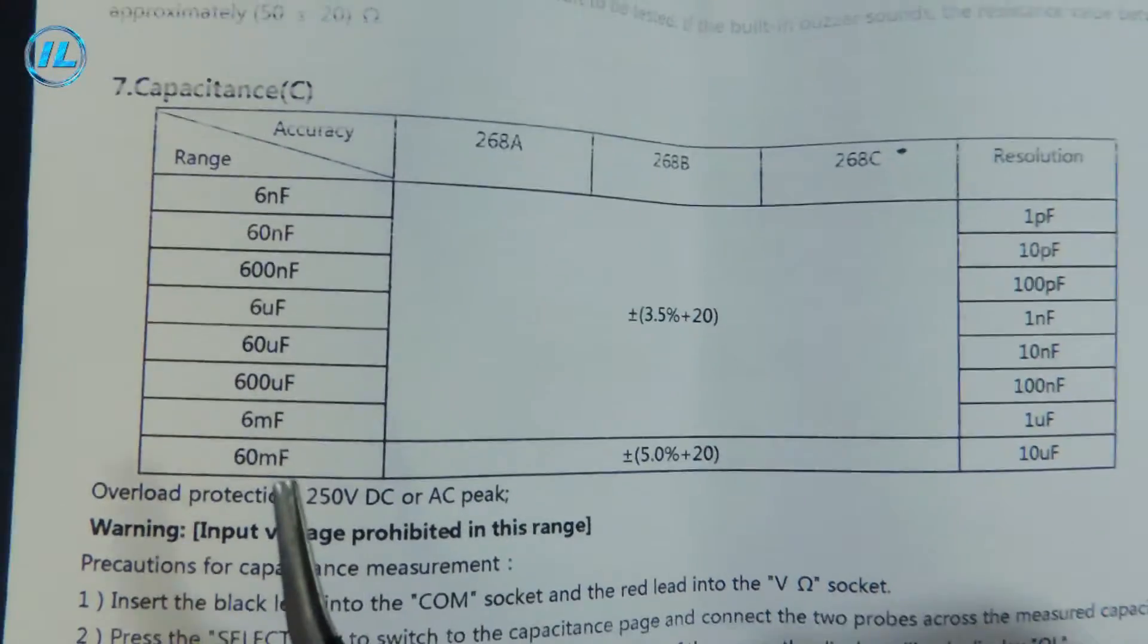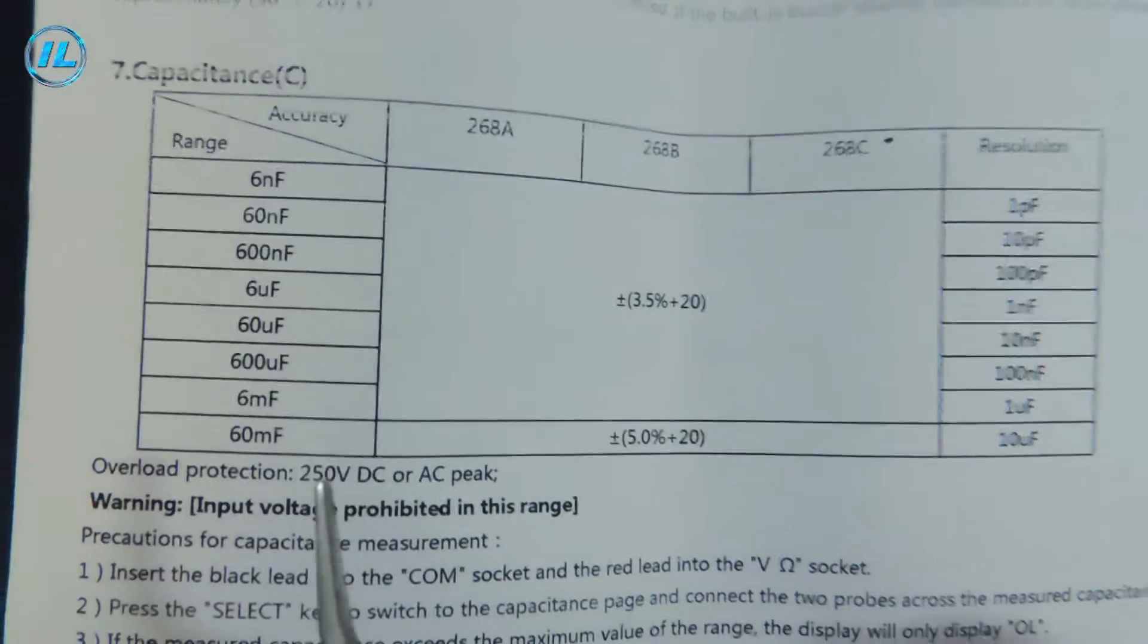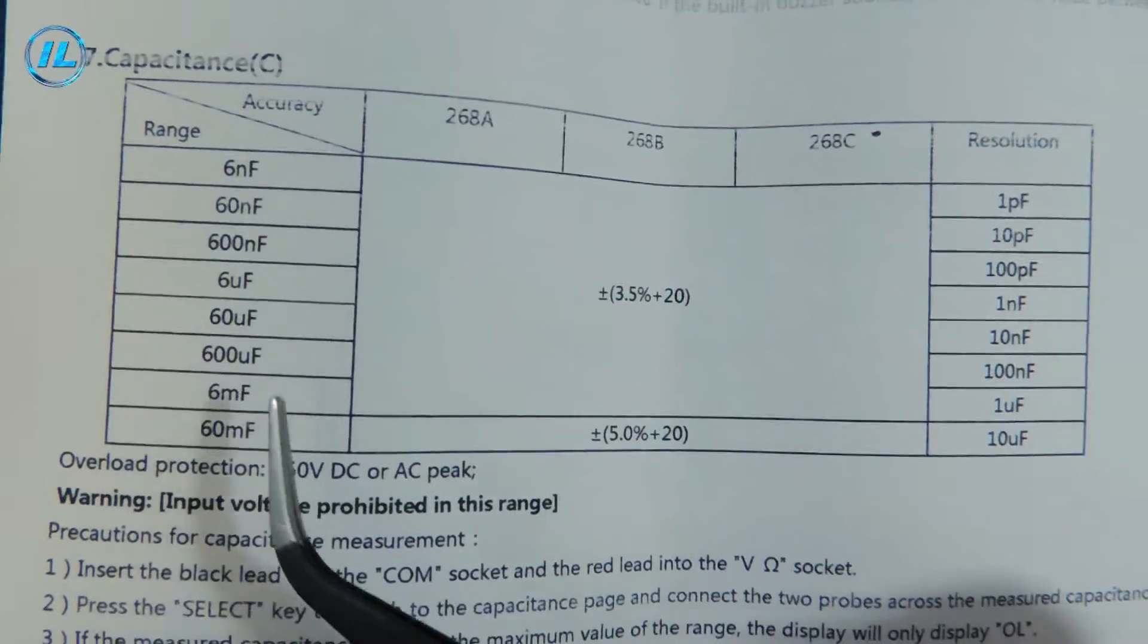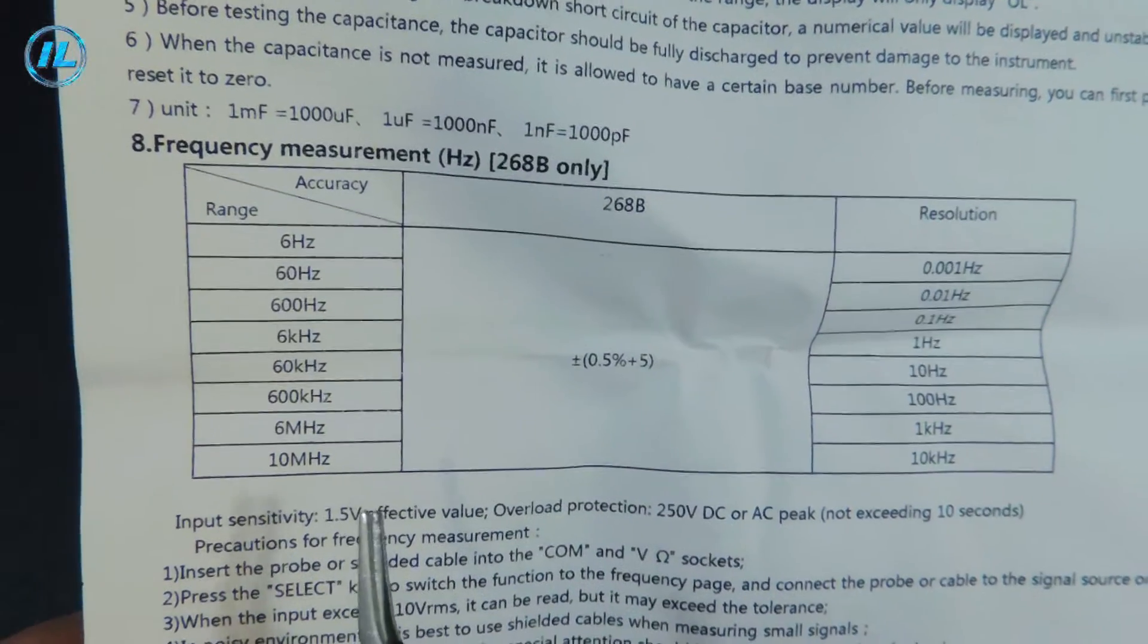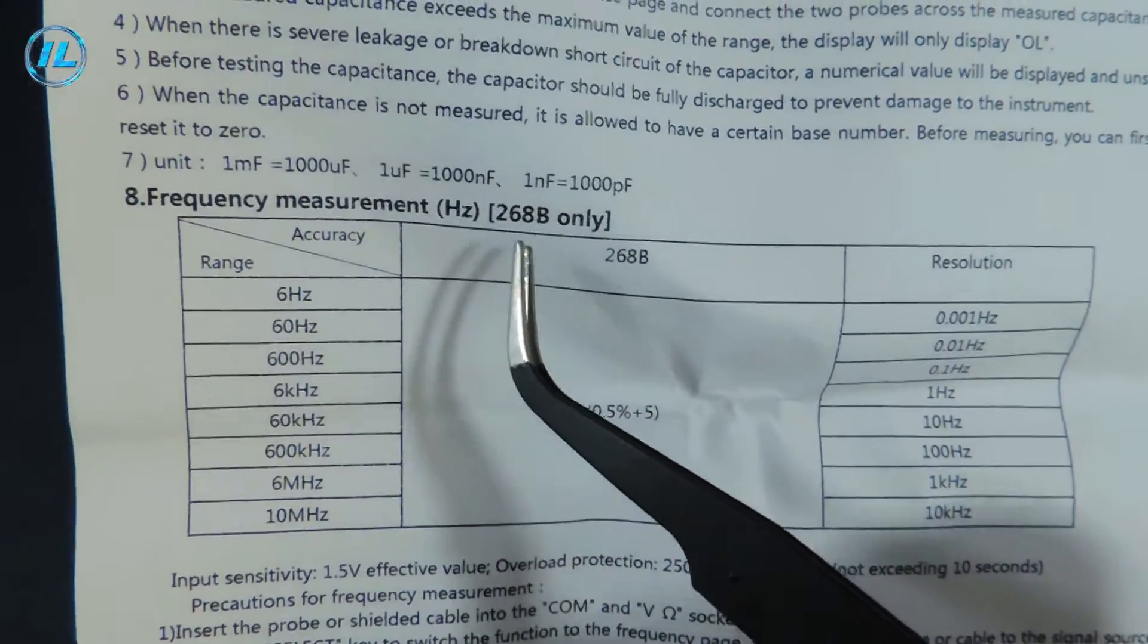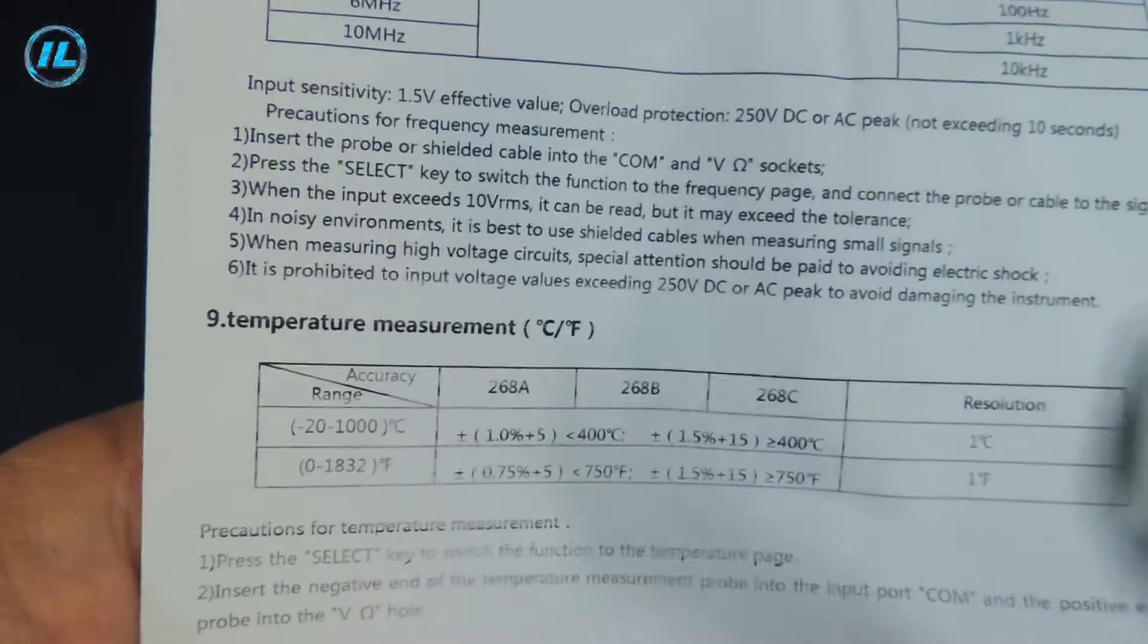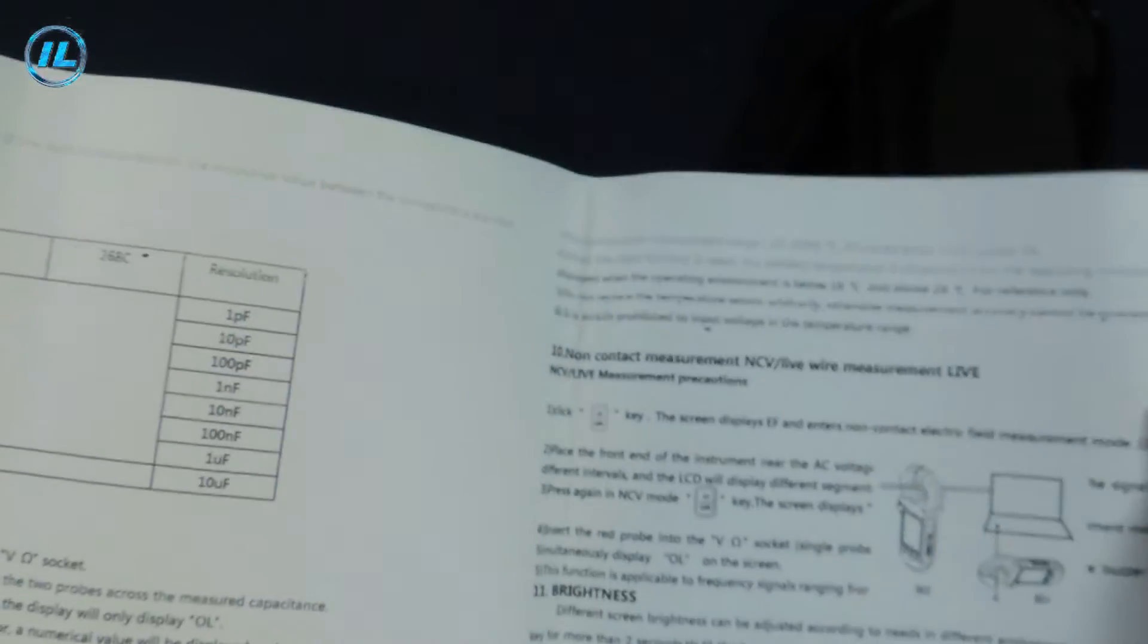The next sheet, and a few more parameters. Measuring capacity up to 60 mF, that is, up to 60,000 microfarads. The error is 5%. But when measuring up to 6 mF, the error is 3.5%. Frequency measurement up to 10 MHz. The margin of error is 0.5%. It is noted here that frequency measurement is only available in the 268B model. Temperature measurement up to 1000 degrees Celsius. It is quite obvious that these current pliers have excellent parameters, which are quite enough for almost all types of measuring and repair work.